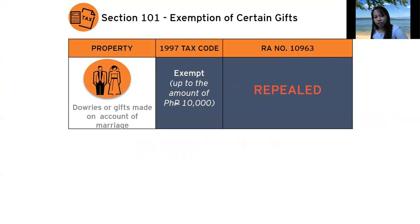Regarding exemptions of certain gifts, dowries and gifts made on account of marriages were previously exempt up to 10,000 pesos under the old Tax Code. This exemption has now been repealed, so any dowries may be subject to donor's tax as long as the amount exceeds the threshold.